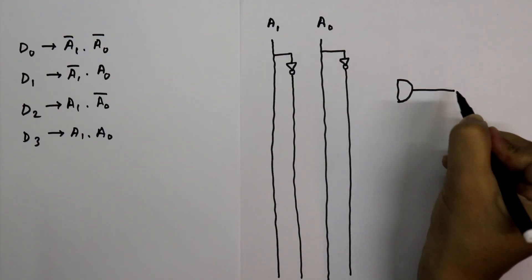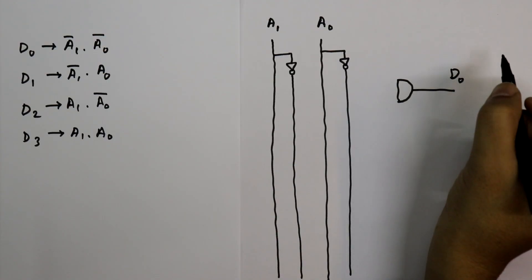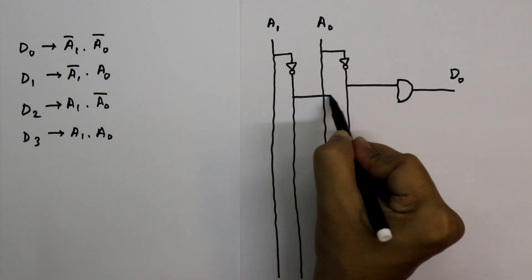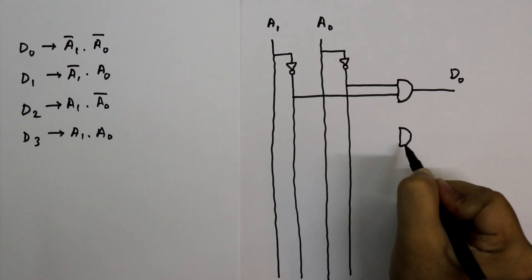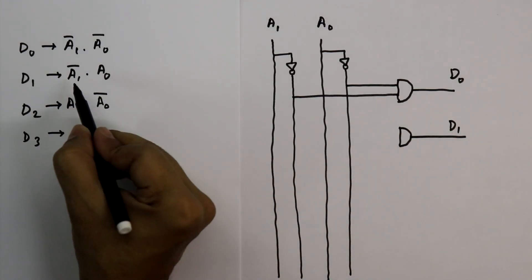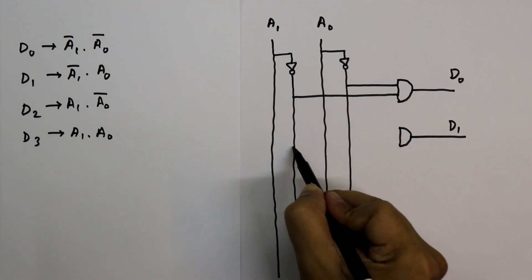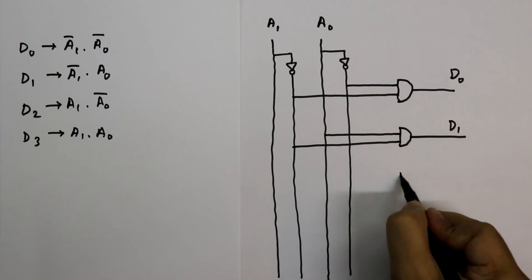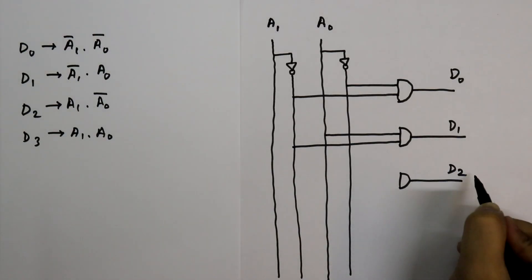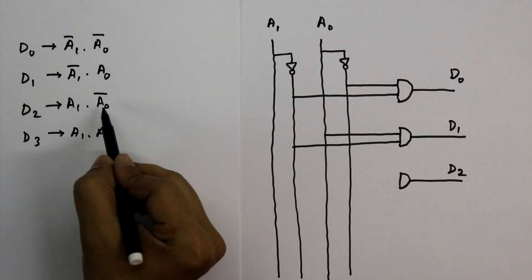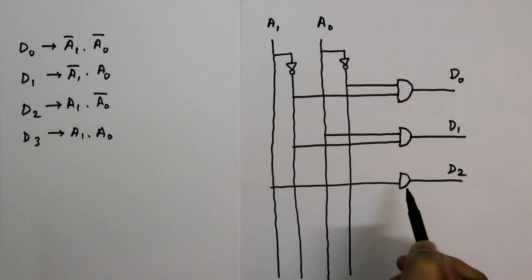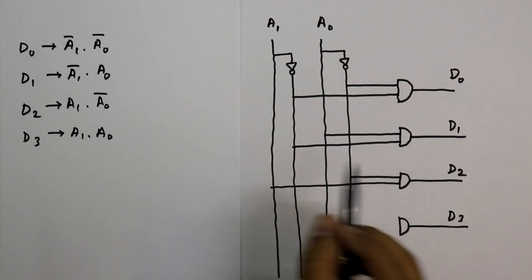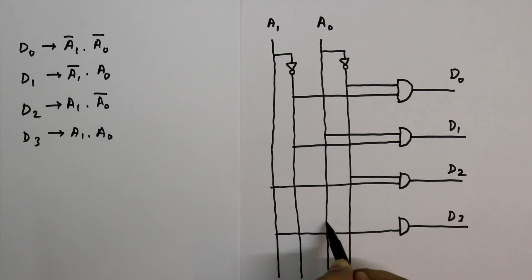Now let's design the D0 output. We need A1 complement dot A0 complement — dot means AND gate — so here we use an AND gate and we get D0. For D1 we need A1 complement dot A0. For D2 we need A1 dot A0 complement. For D3 we need A1 dot A0.